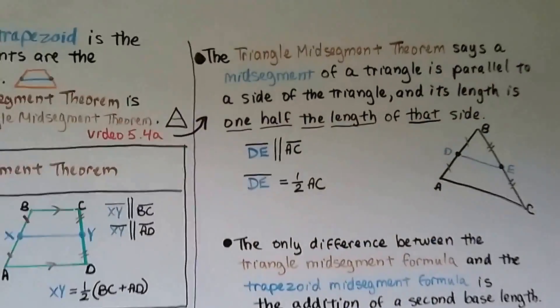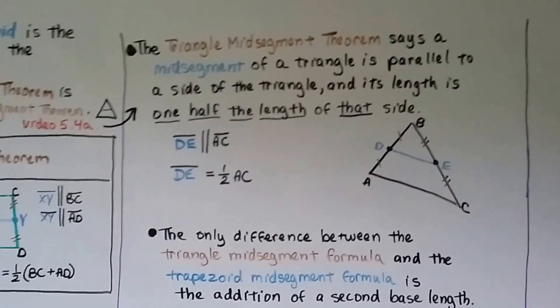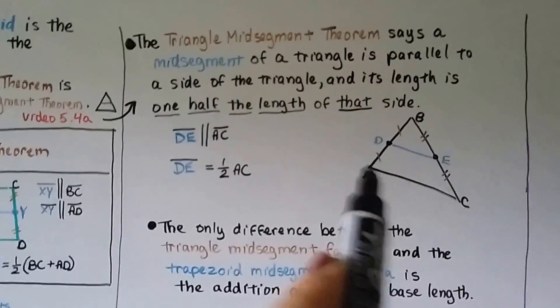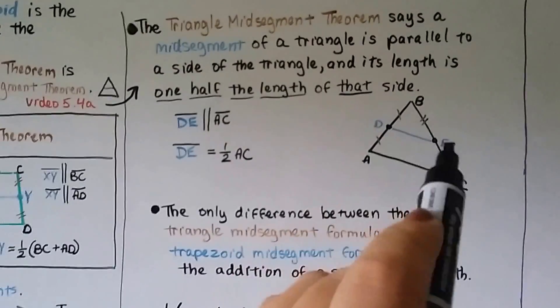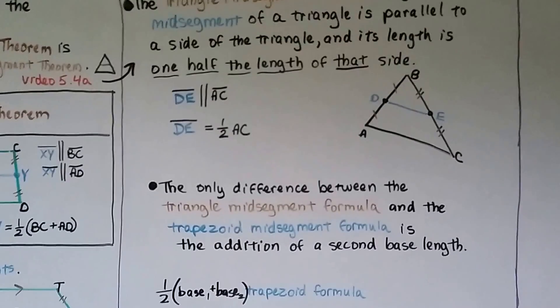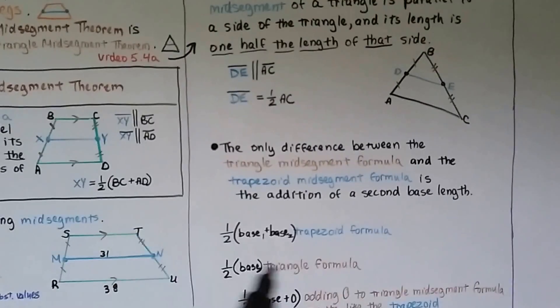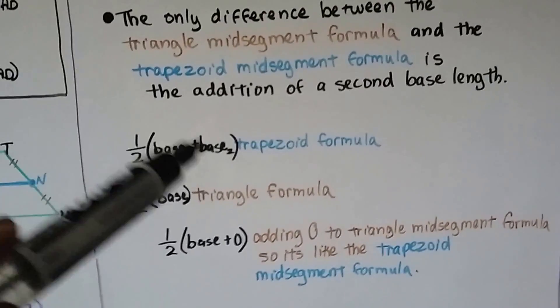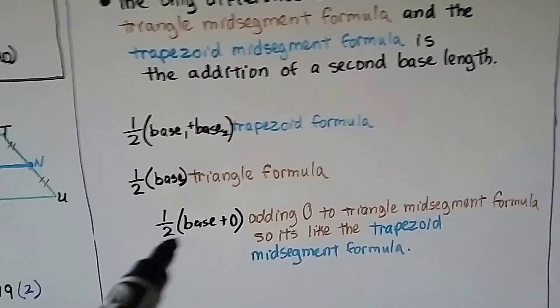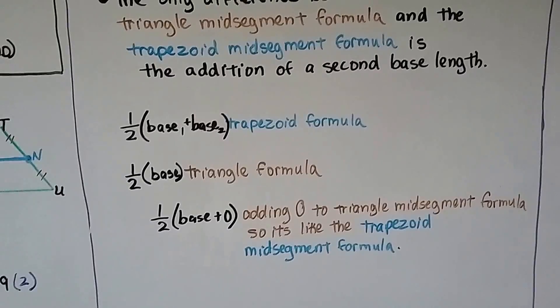The triangle mid-segment theorem from lesson 5.4a says a mid-segment of a triangle is parallel to the third side and its length is one half the length of that side — so DE equals half AC. The difference between the triangle and trapezoid mid-segment formulas is simply the addition of a second base. The trapezoid formula is half times (base one plus base two); the triangle formula is just half times one base. You can think of the triangle formula as the trapezoid formula where the second base equals zero.